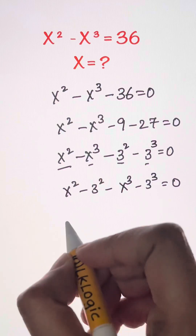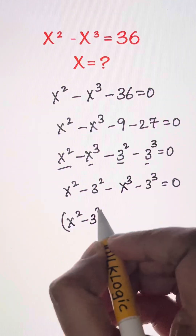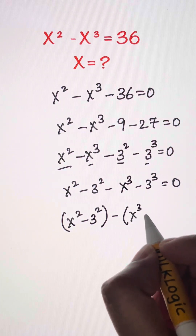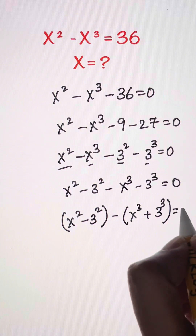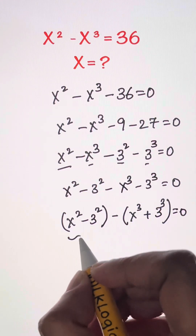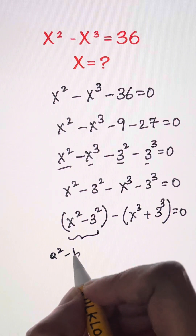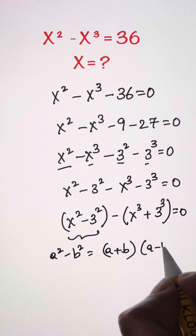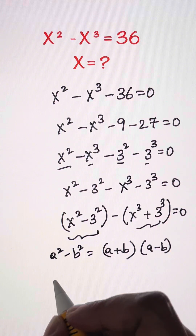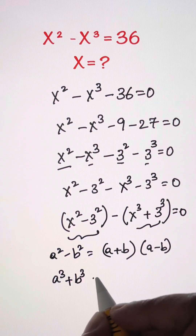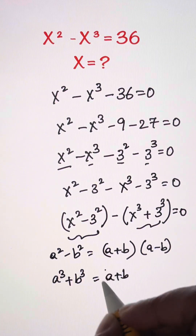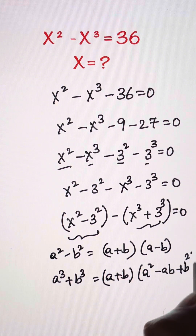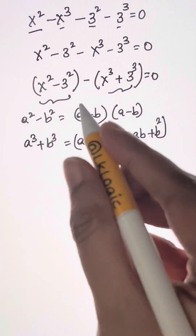I'm going to write this again: x squared minus 3 squared. Here I'm going to take out the negative sign common, so I'm left with x cubed plus 3 cubed, equal to 0. This is in the form of a squared minus b squared, which is (a+b)(a-b). And this part is a cubed plus b cubed, which equals (a+b)(a squared minus ab plus b squared).